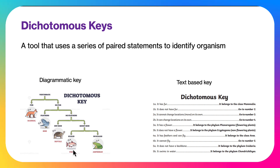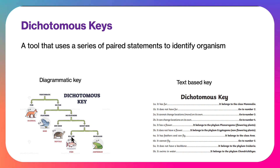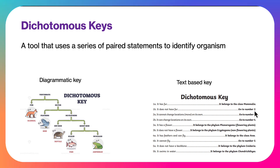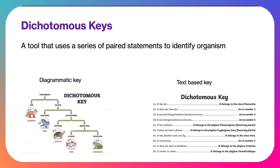We can use a diagrammatic type key, which is basically a series of steps like a flow chart. We often use that in primary school, but in senior studies and out in the field, we tend to use more of a text-based one. Each one is a series of paired statements — it has fur, it doesn't have fur — and it's kind of like a choose-your-own-adventure: if it doesn't have fur, then you go to number two, and so on.